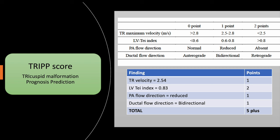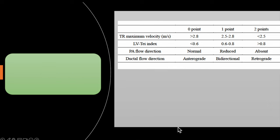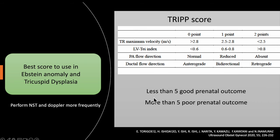Applying the TRIP score to our patient: TR velocity was a little more than 2.5, giving a score of 1. LV TEI index was 0.84, giving a score of 2. Pulmonary artery flow direction was reduced, and ductal flow was bidirectional. The total score was five-plus. Since a score greater than five indicates bad outcome, this patient has a poor prognosis.